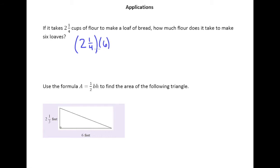Now, we understand that when we are multiplying by mixed numbers, the mixed numbers have to turn to improper fractions. So, two times four is eight, plus one is nine, so it's nine fourths.